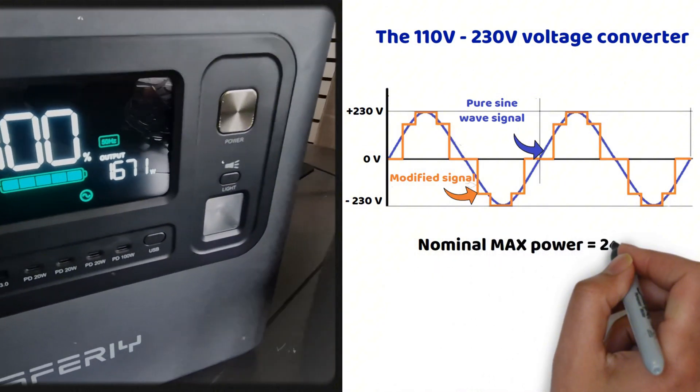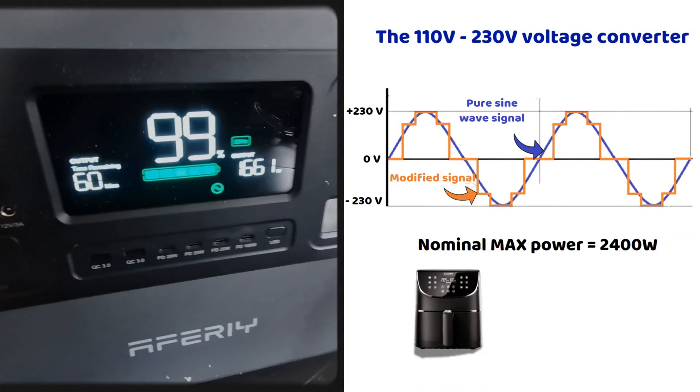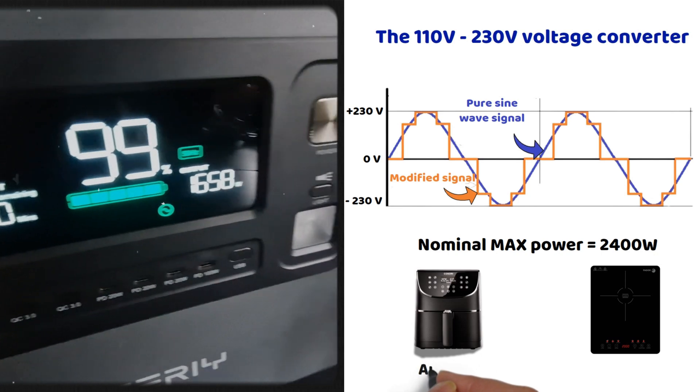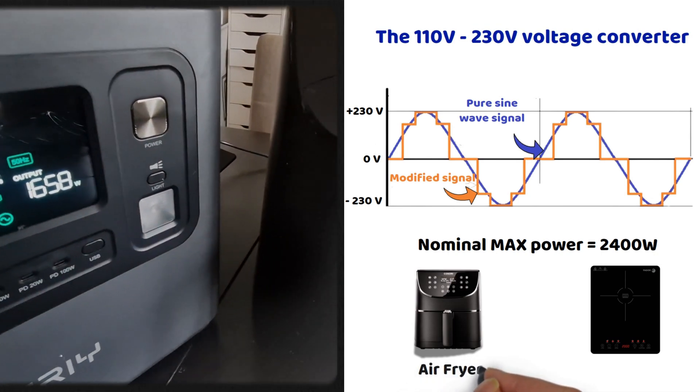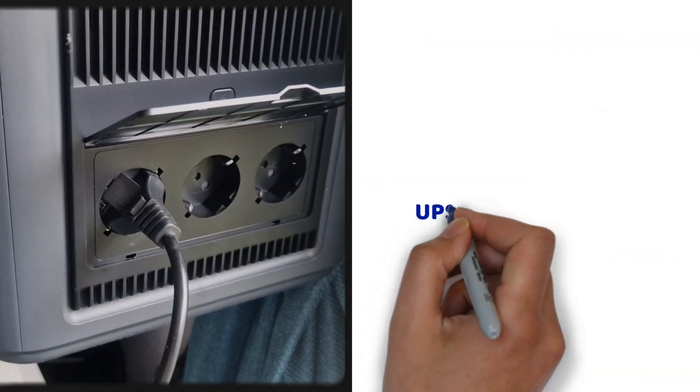The 110 volt and 230 volt output can deliver up to 2,400 watts of continuous power, which is enough to run energy-intensive appliances like large refrigerators, microwaves, or even cooking devices, such as an electric air fryer or an induction cooktop.